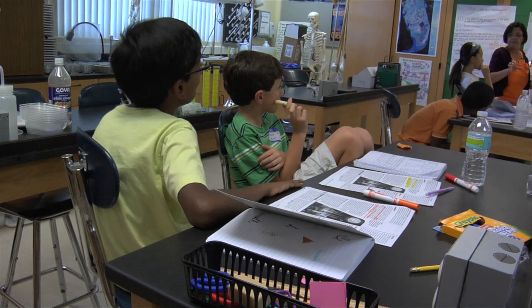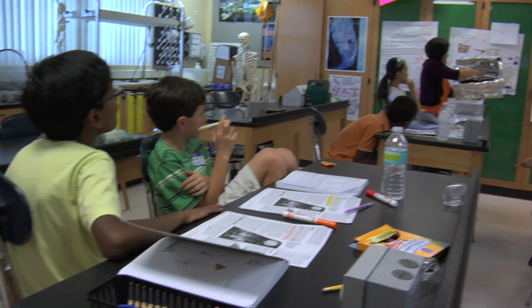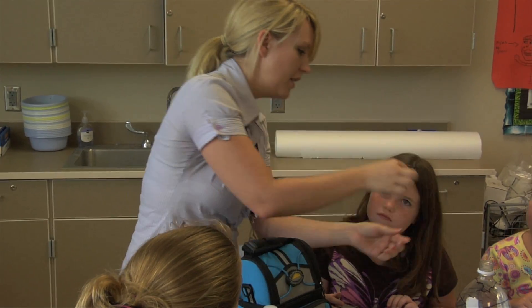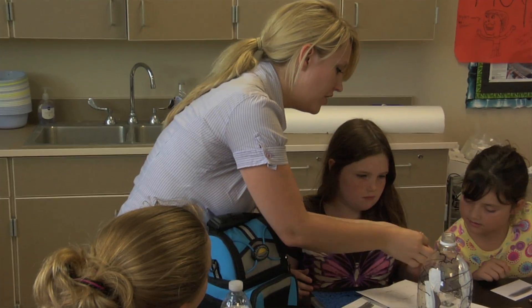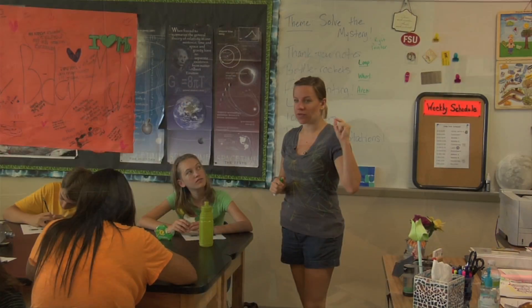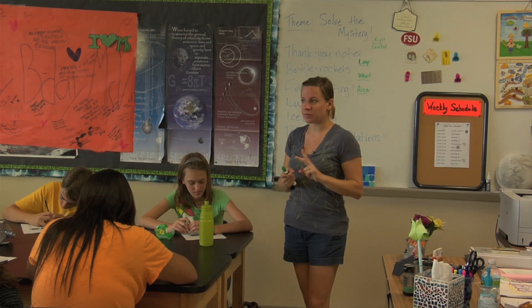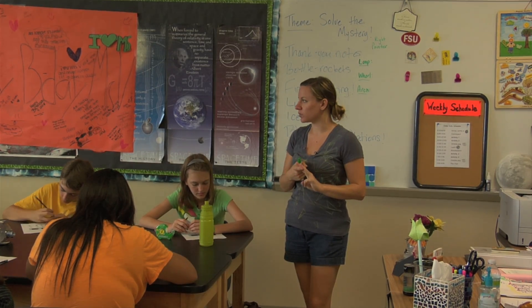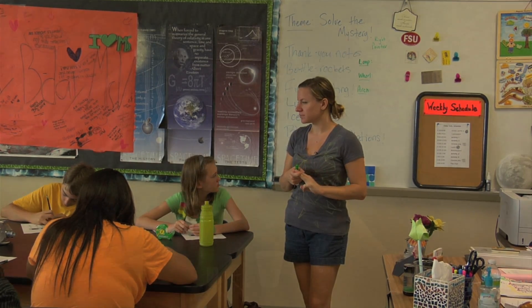Next, have your students design and write down an experiment to prove what has happened. They should give a complete description, including a procedure and materials that are needed. After the activity, lead a discussion with the class comparing and contrasting their explanations.